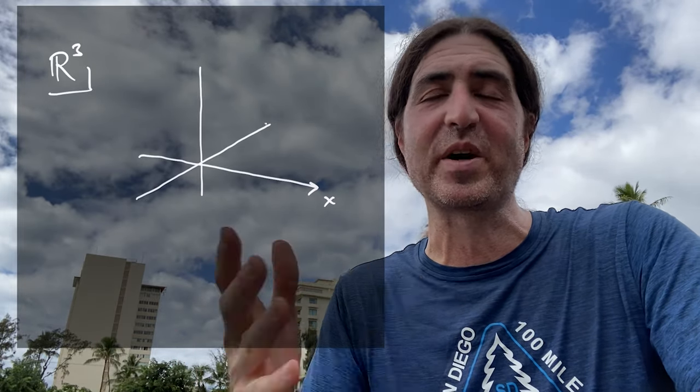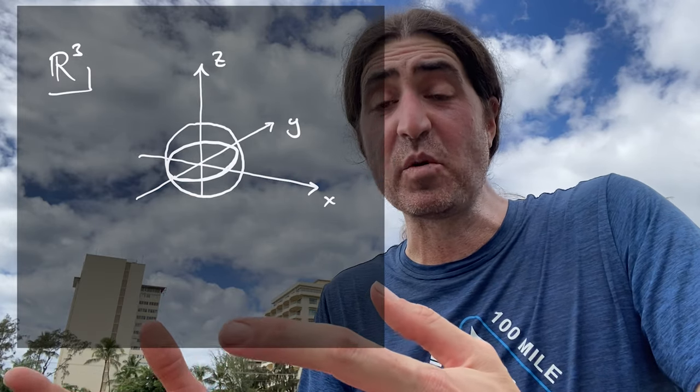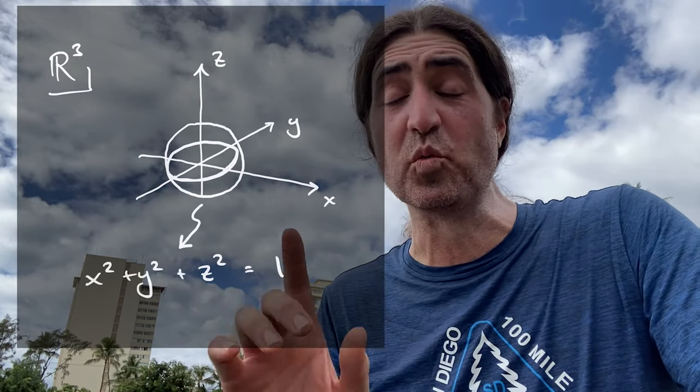To start with, consider the sphere embedded into R3 in the standard way. That is, if x, y, and z are your typical orthonormal basis for R3, then the equation x squared plus y squared plus z squared equals one gives you the unit sphere — the standard embedding of the two-sphere into R3.